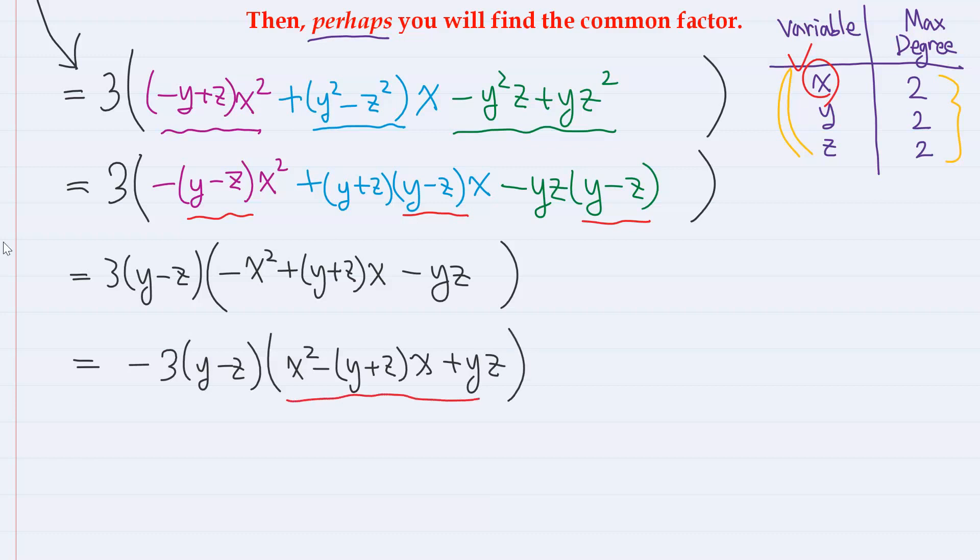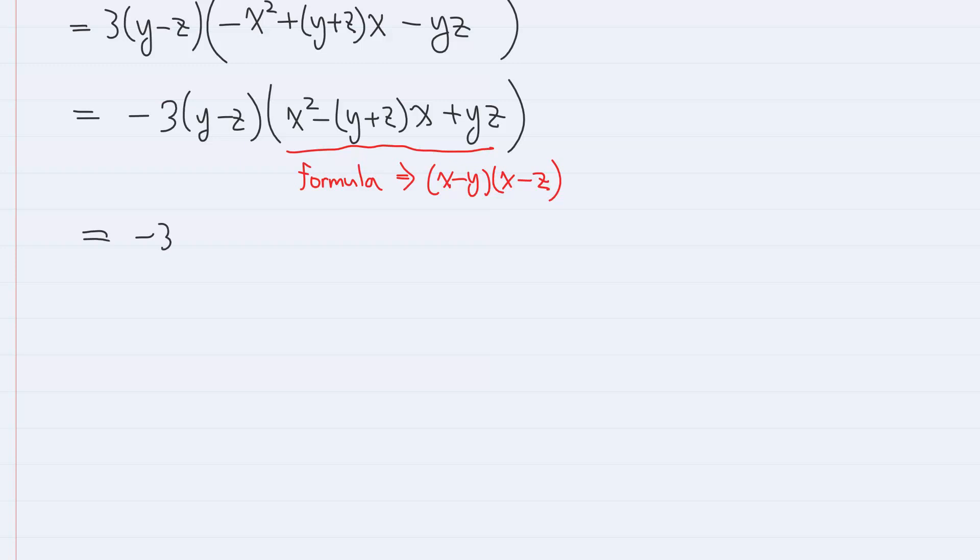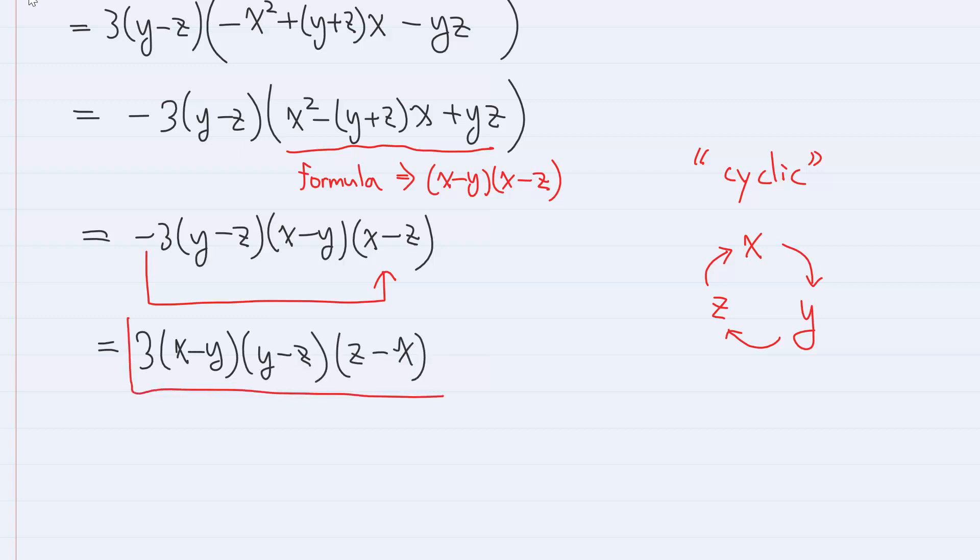Now, look at this part. This is a basic factorization formula for quadratic expressions, which is (x - y)(x - z). So, we have -3(y - z)(x - y)(x - z). Here, let us write the answer in a completely cyclic manner. So, if we multiply this minus to (x - z), we have 3 times, and let's write (x - y) first, then (y - z), then (z - x). So, we have arrived at the same answer.